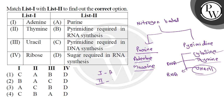Uracil is a pyrimidine required in RNA, which is the polynucleotide chain. So the answer for the third one — uracil — is B.